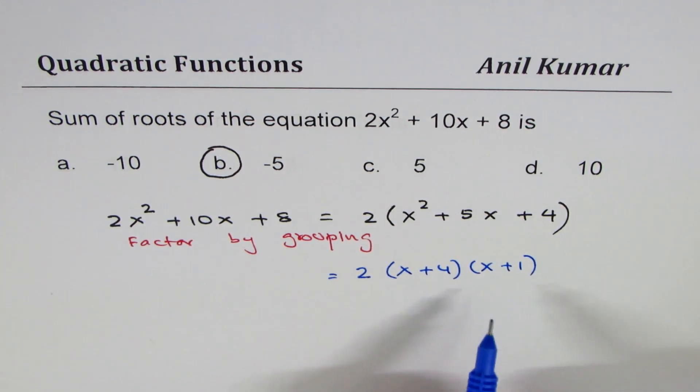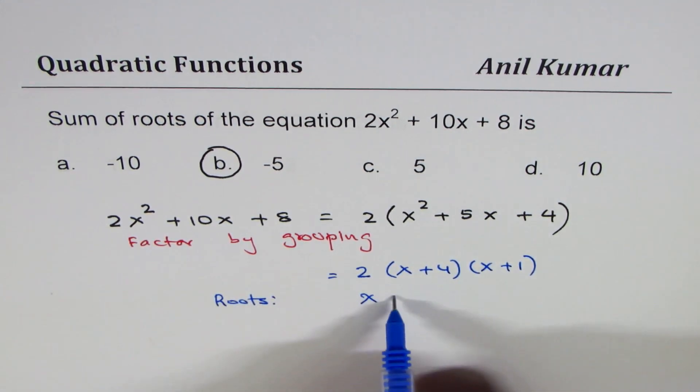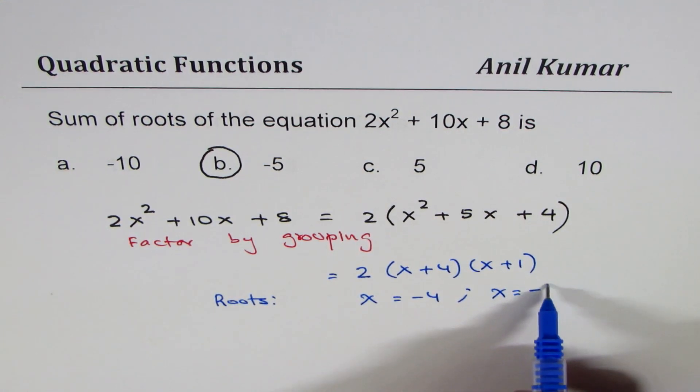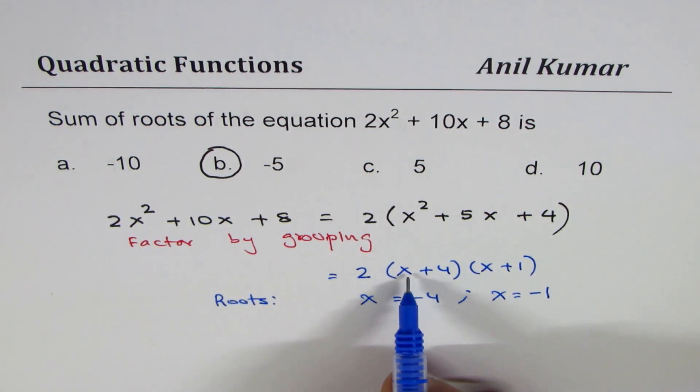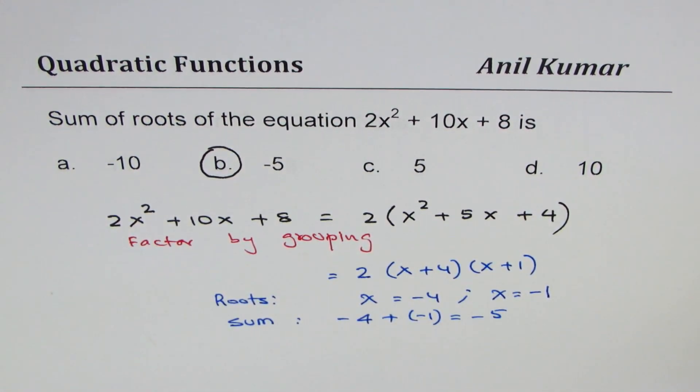I have taken very simple examples because I want to really make sure that you understand the concepts. So what are the roots? Roots are at x equals to minus 4 and at x equals to minus 1. If I substitute minus 4 you get 0. That is the root. If I substitute minus 1 you get 0. And what is their sum? Sum is minus 4 plus minus 1 which is indeed minus 5. Correct.